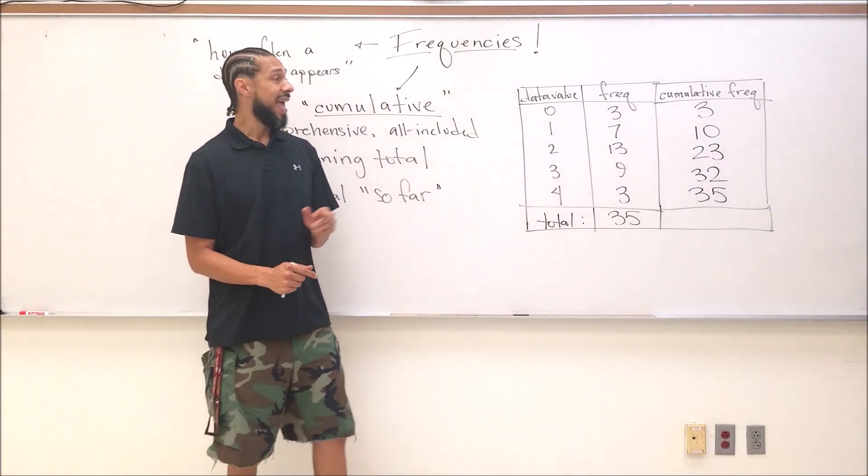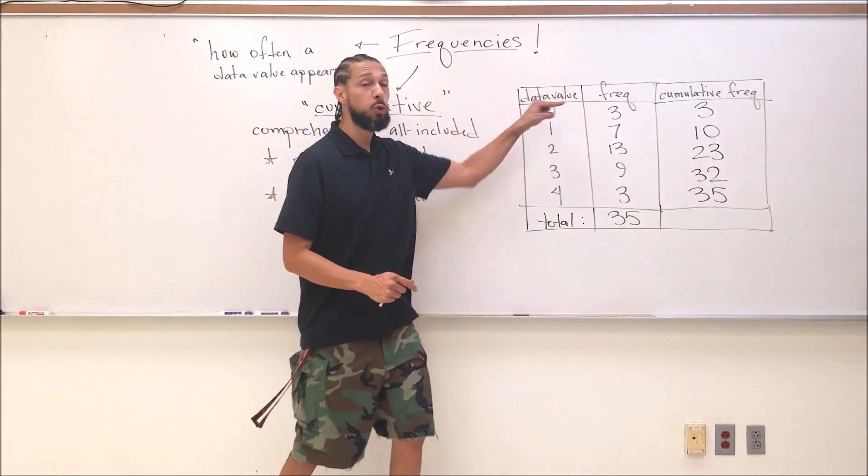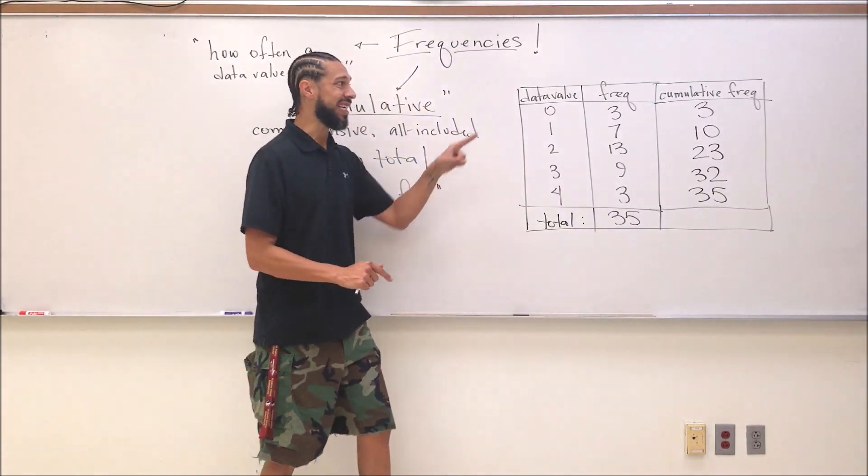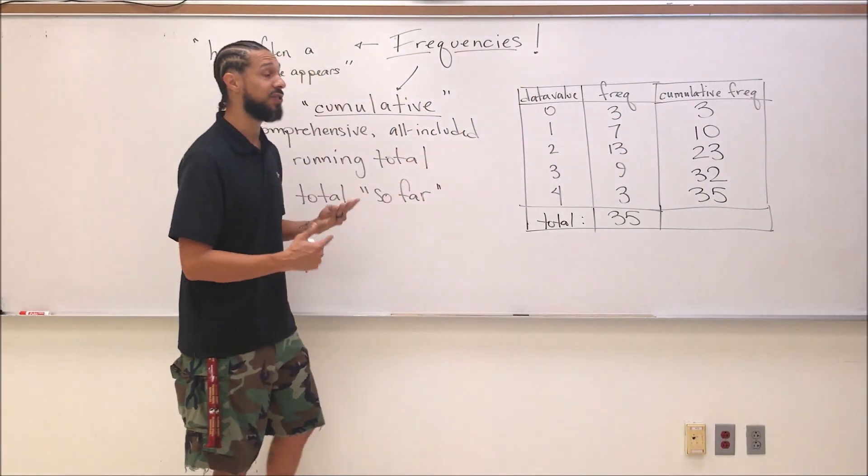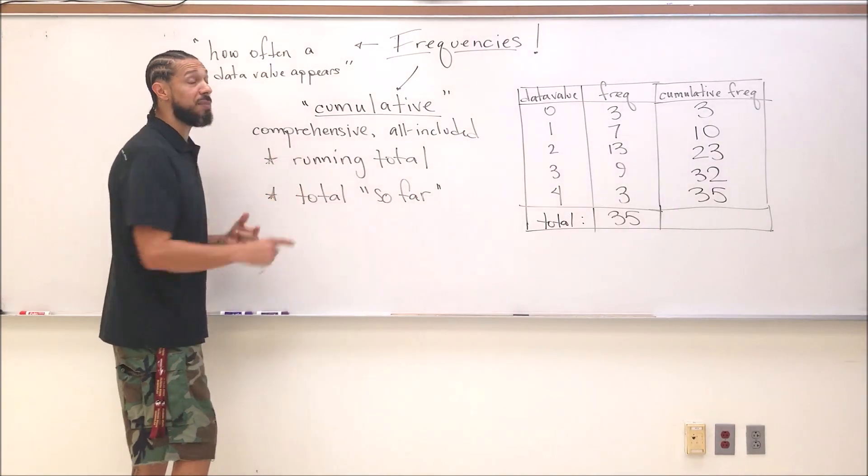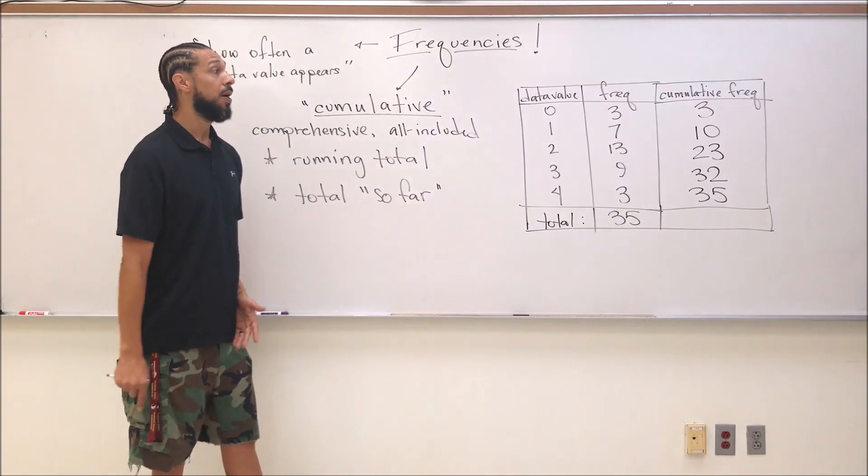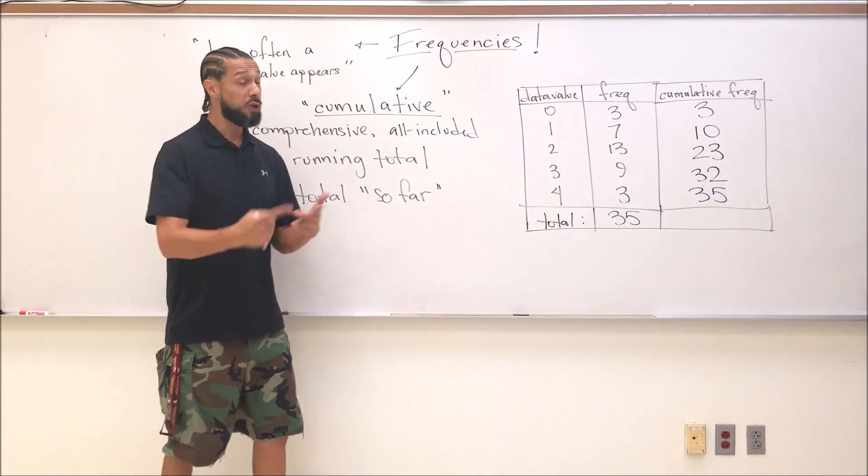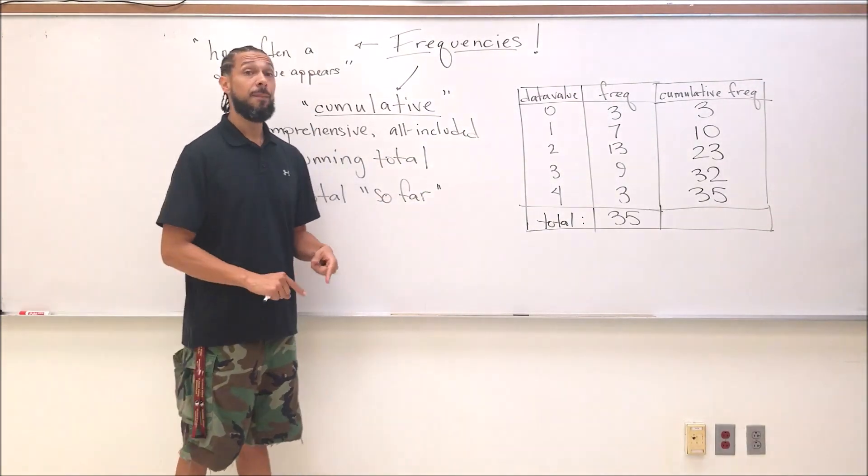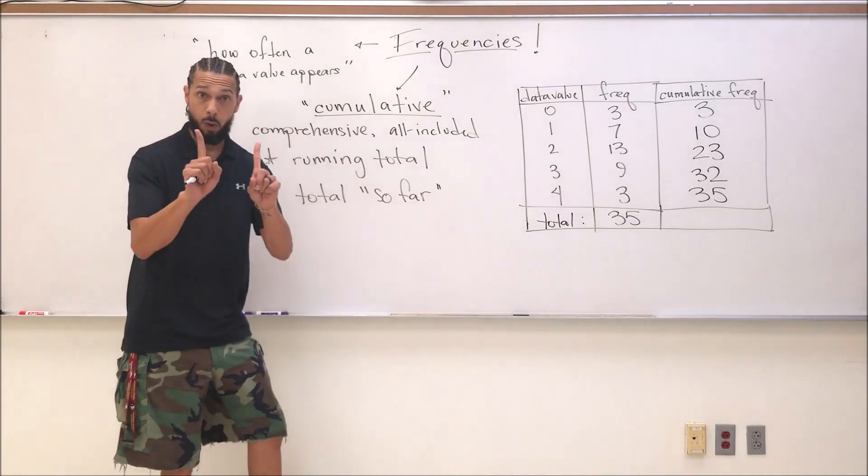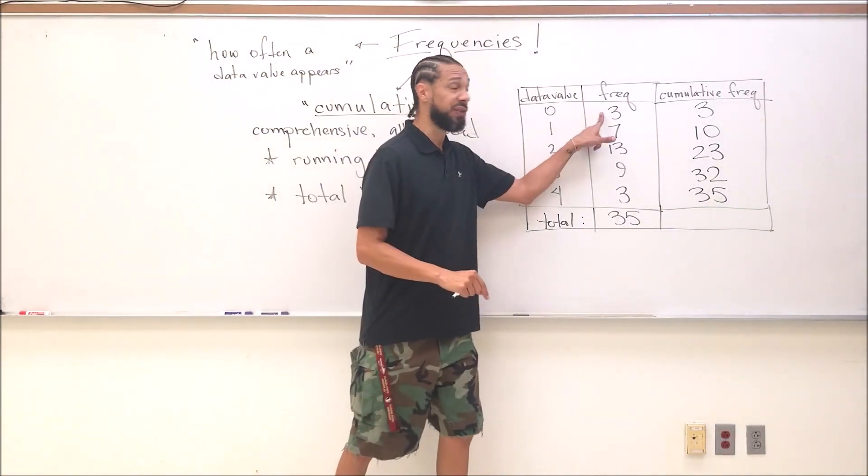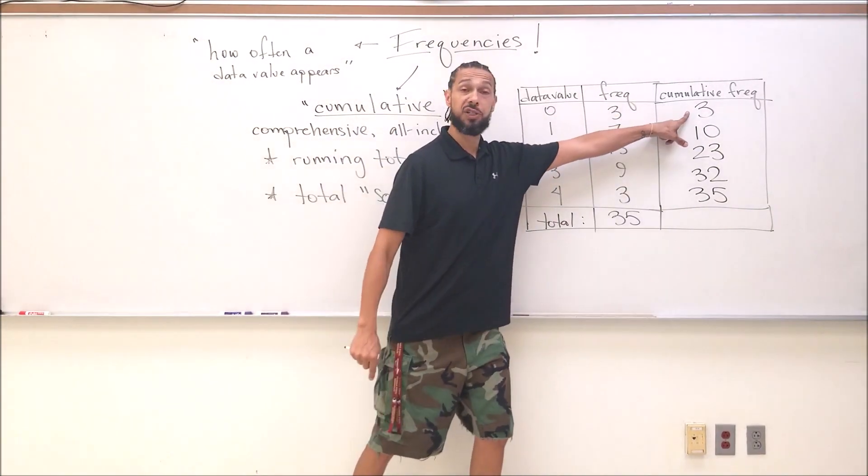Doesn't that make sense? Because my total frequency, my total number of data values is 35 data values. As I include each data value, I keep a running total of how many data values I have so far. This chart is going to be used for a number of reasons, a number of processes and analyses here in class. But this is how the chart is built. We'll talk about what we're going to do with the chart later.